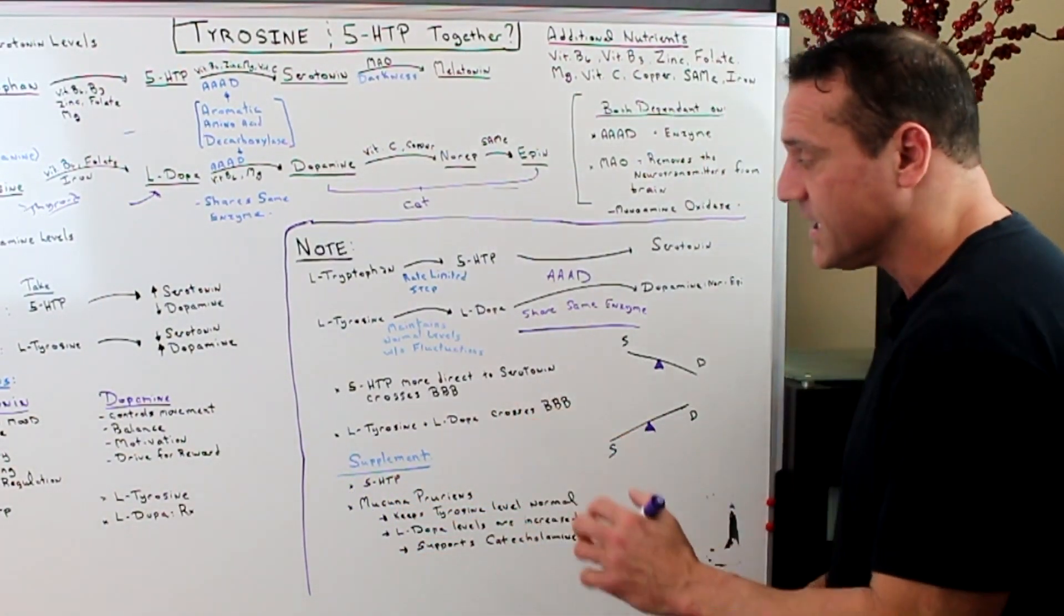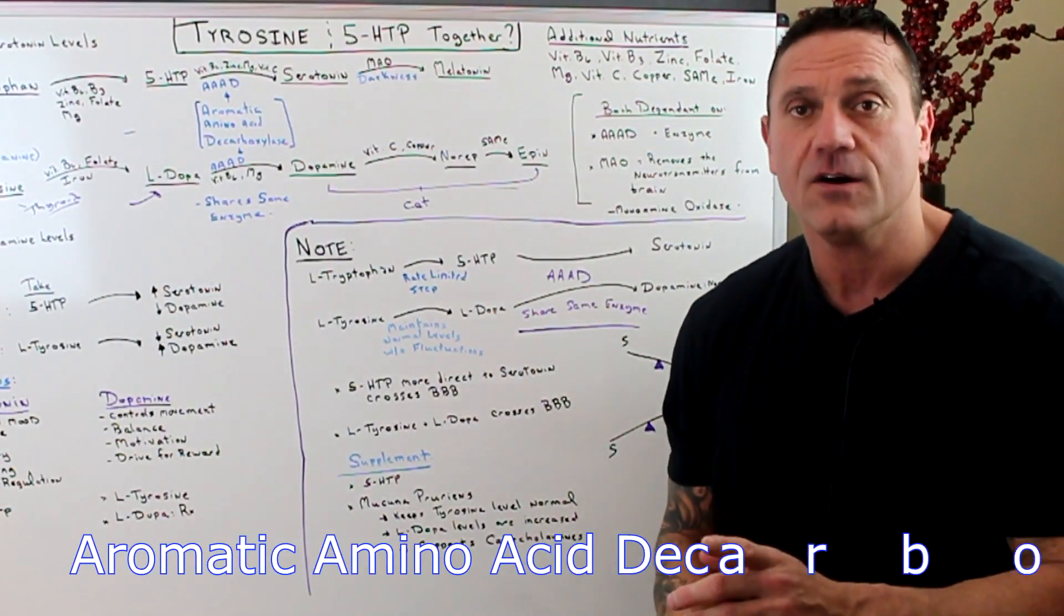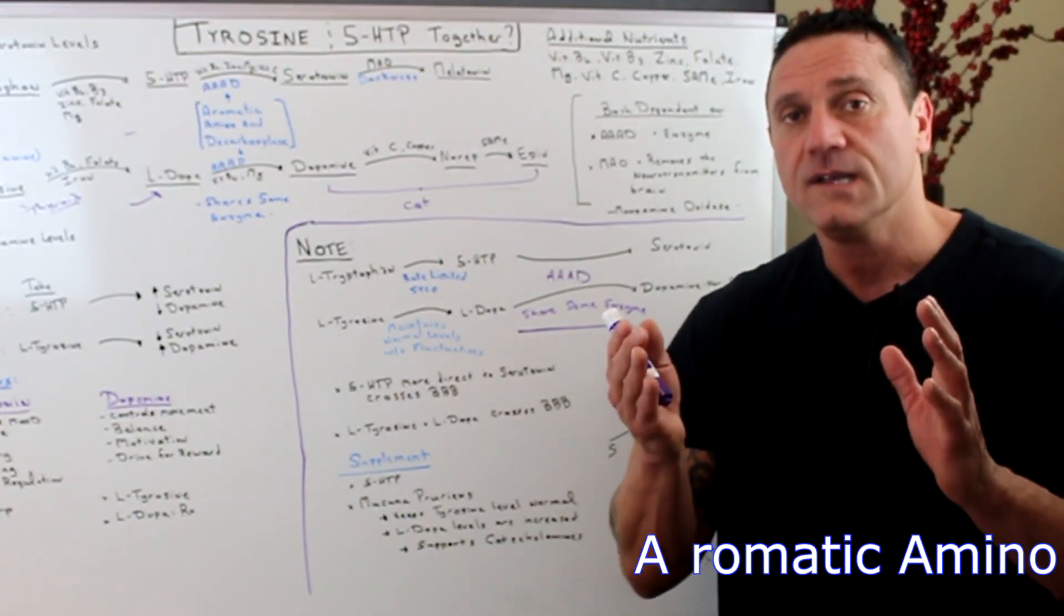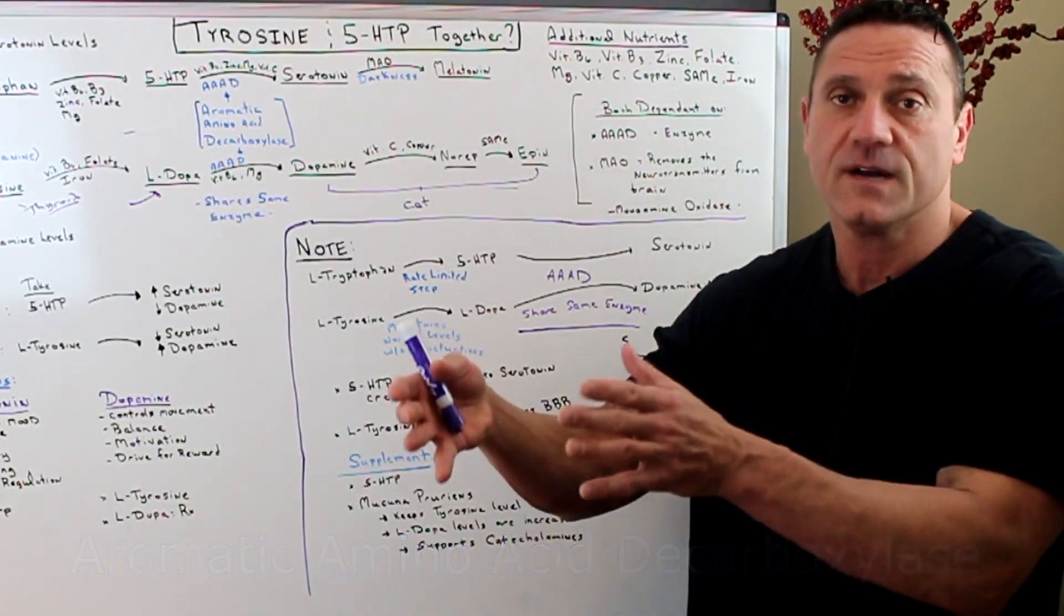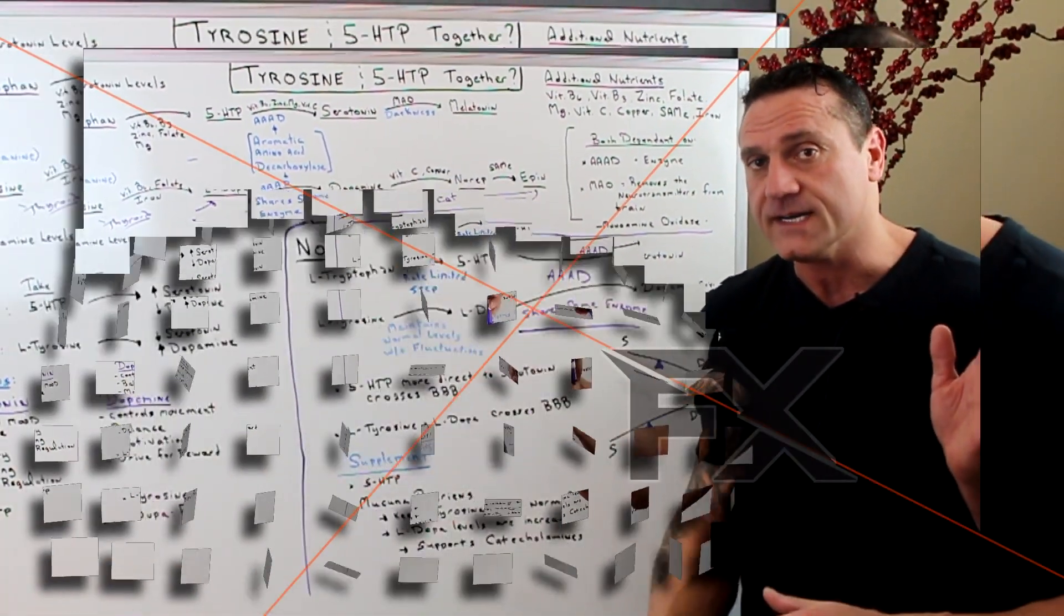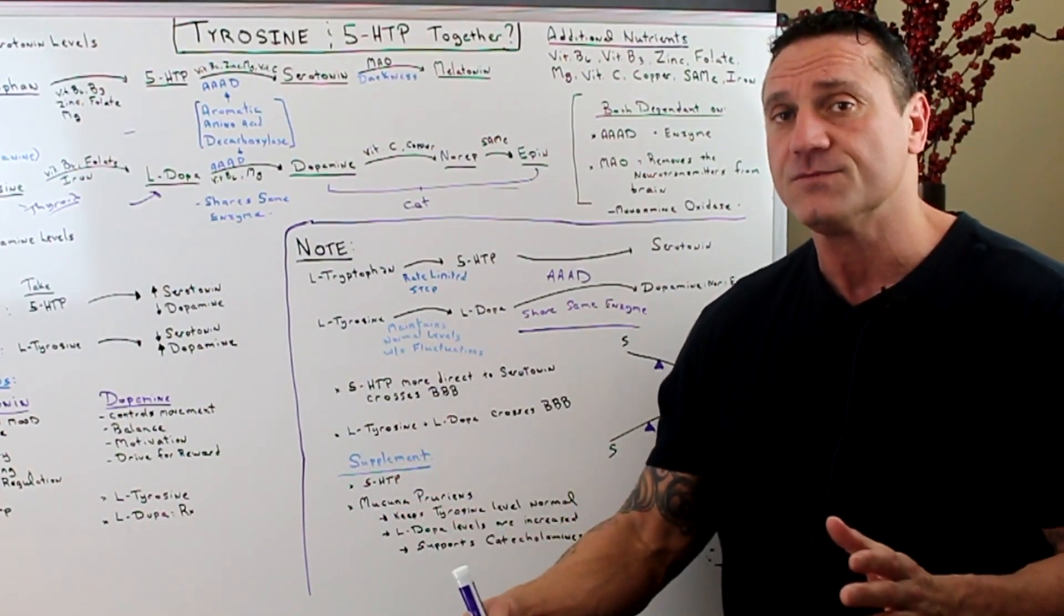But the thing is we have to watch out for is that AAAD and that's how you get increased serotonin and too little dopamine or too much dopamine and too little serotonin. So this is where you have to monitor it. Supplements 5-HTP, I always recommend anywhere from 100 to 300 milligrams a day spread out because remember 5-HTP has a lot of purposes.